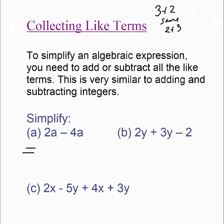You can go straight to the answer. 2a's take away 4a's — that's just the same as saying what is 2 minus 4. It's just like adding and subtracting integers. So 2a's take away 4a's is negative 2a. The next one is the same thing — it has already been collected for you. The like terms are already together. So 2y plus 3y gives 5y minus 2.